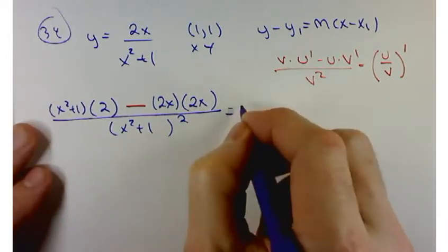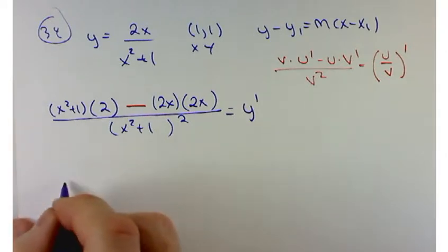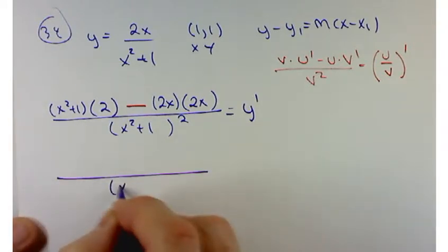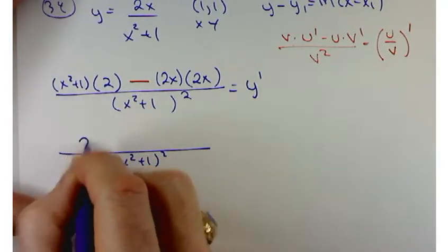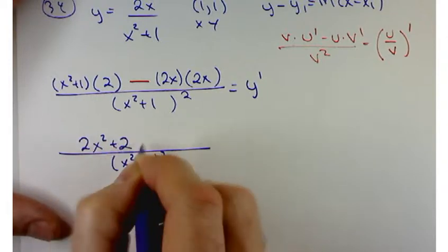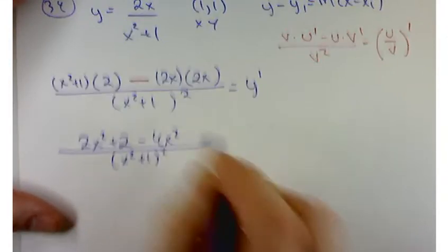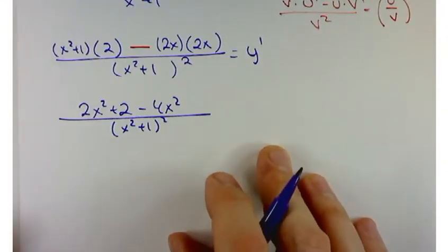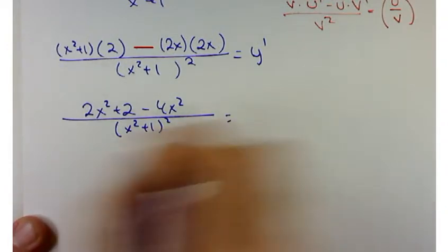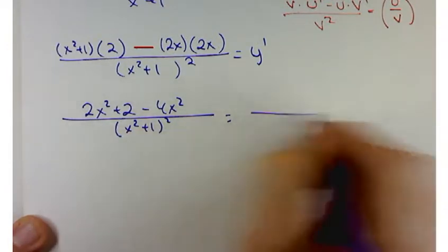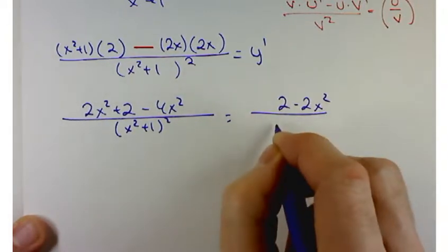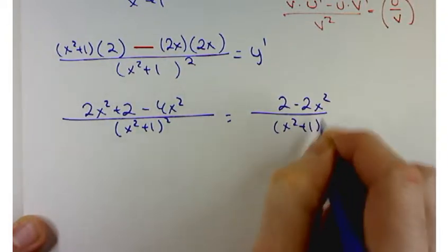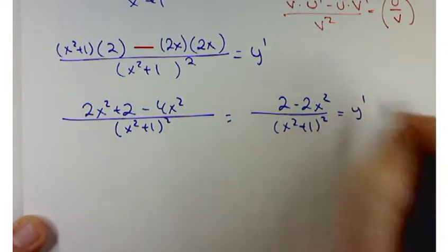So, that's going to be my y prime. Let's see if we can't clean that up a little bit. I'm going to leave x squared plus 1 squared alone in the denominator. But in the numerator, I can clean things up. I'll get 2x squared plus 2 minus 4x squared. Combining things even more. I'll get 2 minus 2x squared over x squared plus 1 squared. And that is my y prime.